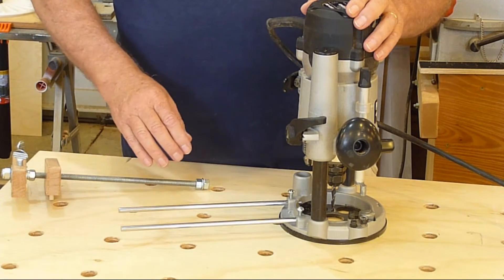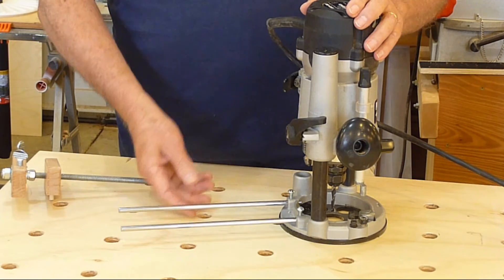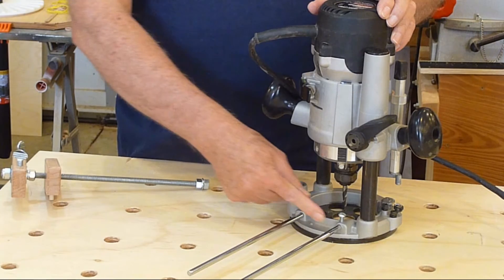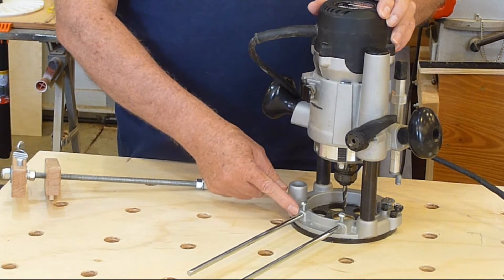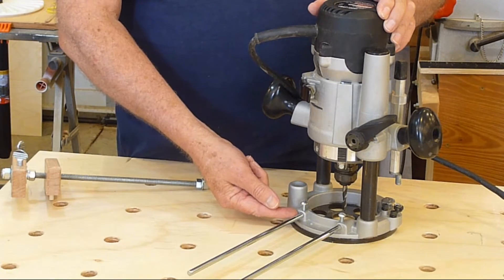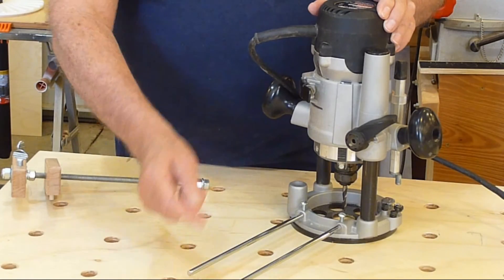I had to measure two critical measurements. I needed to know the distance between here and here. It turned out to be two and three-eighths inches. And I needed to know the height of these holes, the center of the holes, which is three-quarters of an inch.